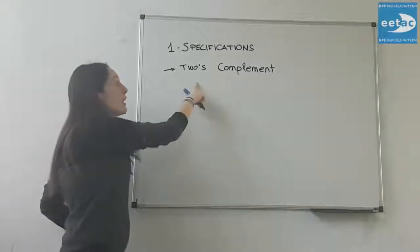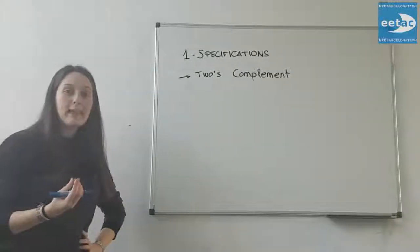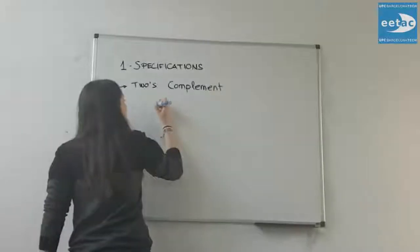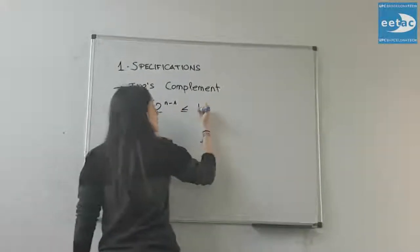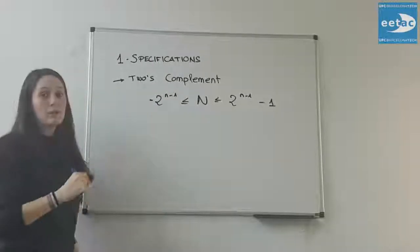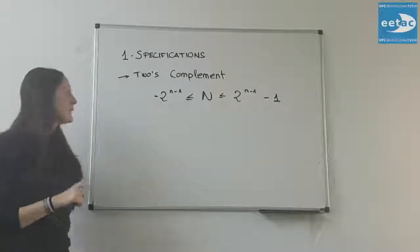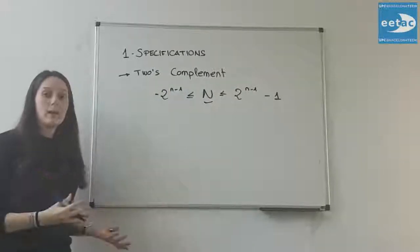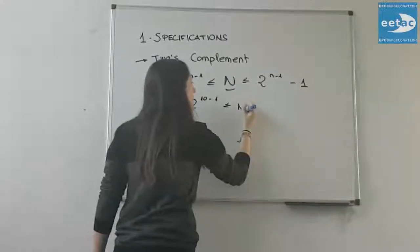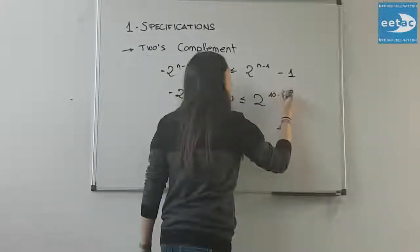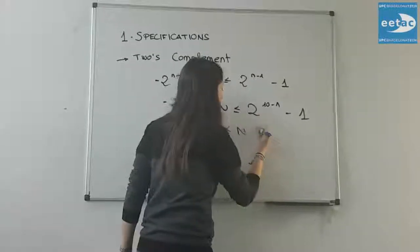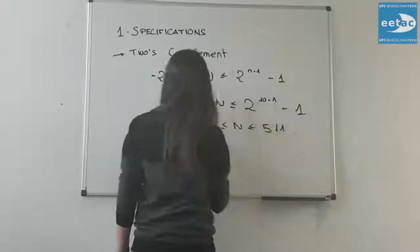Here we go with the explanation of two's complement. It is important to take into account that this algorithm is what allows us to know the range of the system. So the algorithm is this one where this N is referred to the number of bits of the system, in this case 10 bits, and this N is the final result, the R. So in this case we have that the number of bits is 10 and if we finally solve this equation we obtain a range.